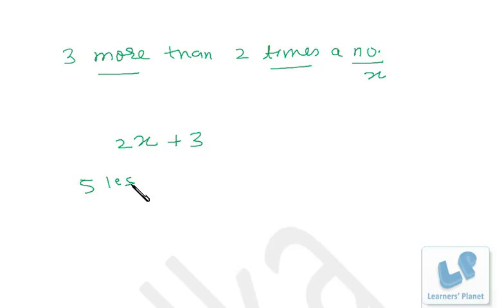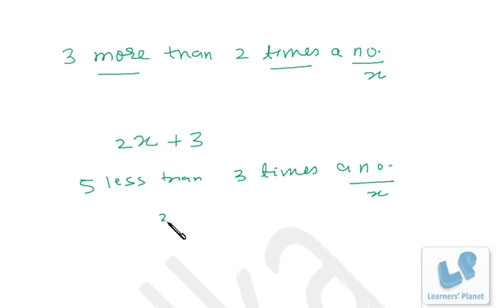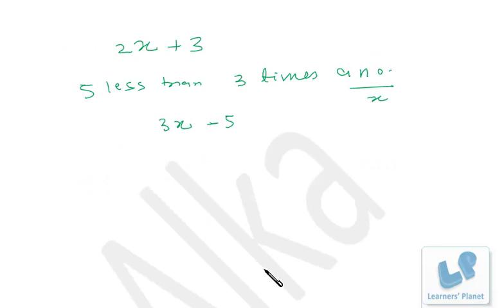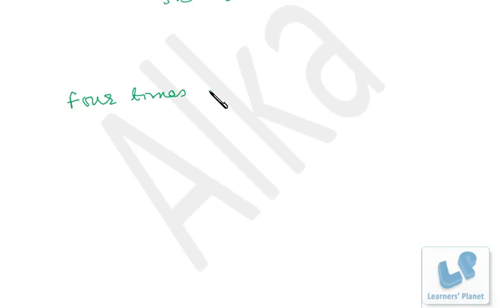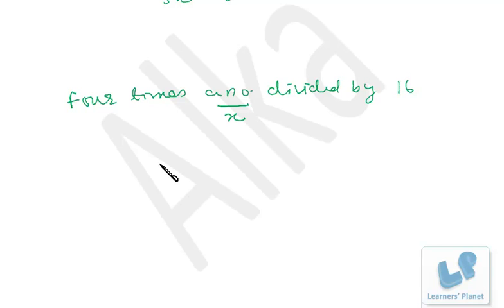Similarly, 5 less than 3 times a number: a number is x, 3 times a number is 3x, and 5 less than this is 3x − 5. Then suppose 4 times a number divided by 16: a number is x, 4 times a number is 4x, divided by 16 gives 4x/16. Here 'times' and 'divided' means multiplication and division — two mathematical operations are used.